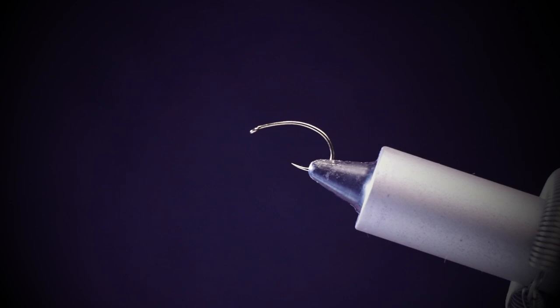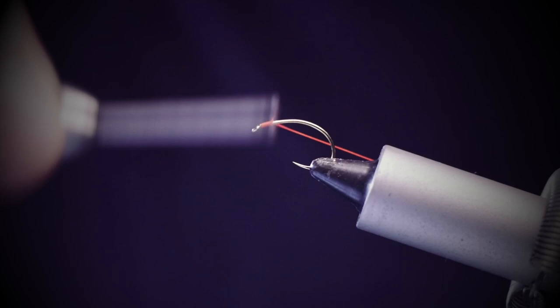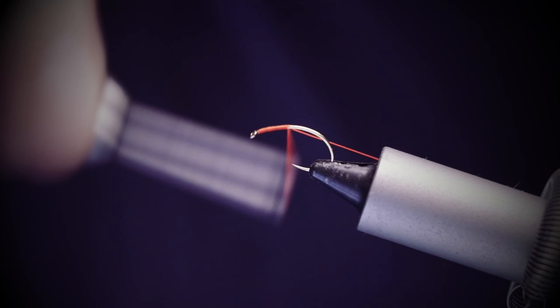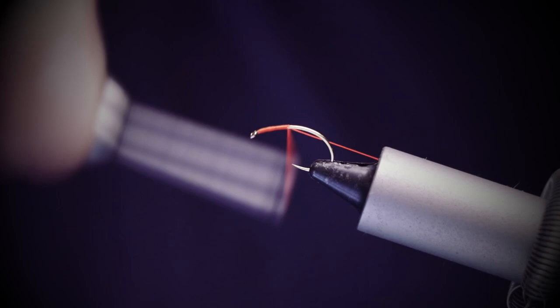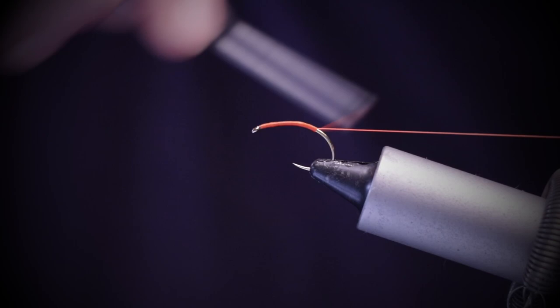The first thing we need to do is take our fire orange thread and just lay down a base. This is helpful to just add a little bit of color. It shines through the microglint when you put it on the body. You can see I'm using the thread just to control the turns as they go down and keep them nice and neat.